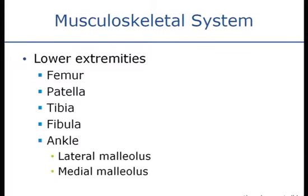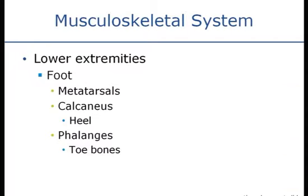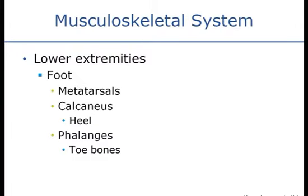The lower extremities include the femur, which is the largest bone in your body, the patella which is your kneecap, and then the tibia and fibula which are the two bones of your lower leg. You also have the lateral malleolus on the outside of your ankle and the medial malleolus — the bump on the inside near your big toe. Your foot is made up of your metatarsals, your heel, and your phalanges, which are your toe bones.